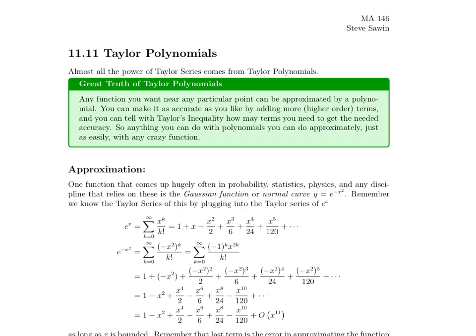Hey y'all, this is the lecture on 11.11, Taylor Polynomials. It's going to bleed into the Taylor Series lectures. It's really kind of the same idea, a little more focused on how one uses this stuff. Almost everything you do with Taylor Series, you're really doing with Taylor Polynomials. And here's the big idea: any function that you want near any particular point, you can approximate by a polynomial. That's the whole point. You can make that approximation as accurate as you like by adding more terms, by making it a higher order polynomial. And you can tell with Taylor's inequality how many terms you need to get the desired accuracy.